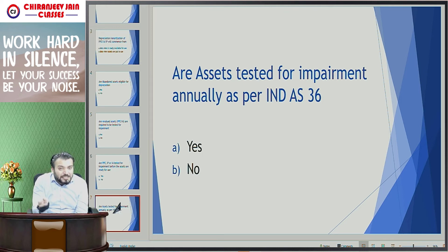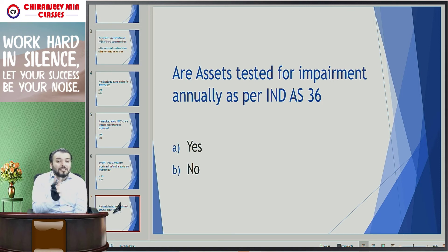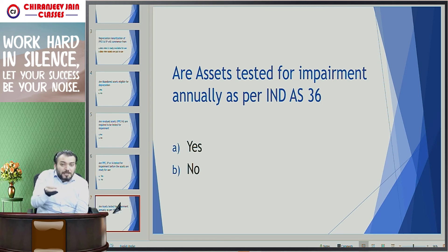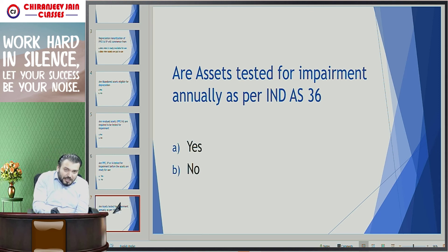There are three types of intangible assets which require annual impairment testing irrespective of indicator. First is goodwill arising in case of business combination. Second is intangible assets not yet available for use. Third is intangible assets having indefinite life. Normally these intangible assets are not amortized, so they are tested for impairment on an annual basis irrespective of indicator. Such intangible assets will be tested annually as well as when there is an indicator.